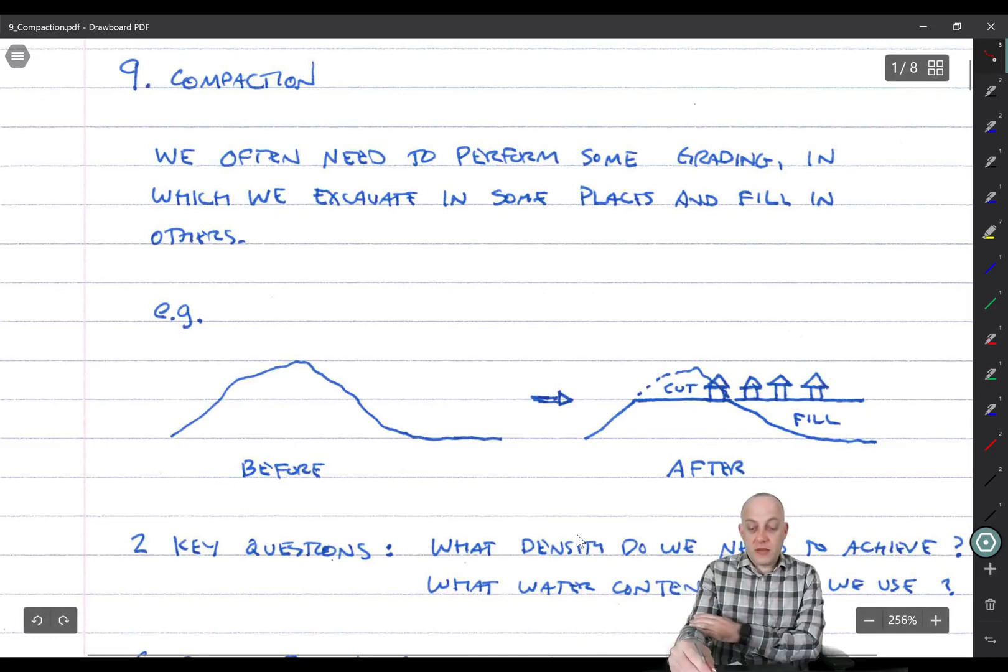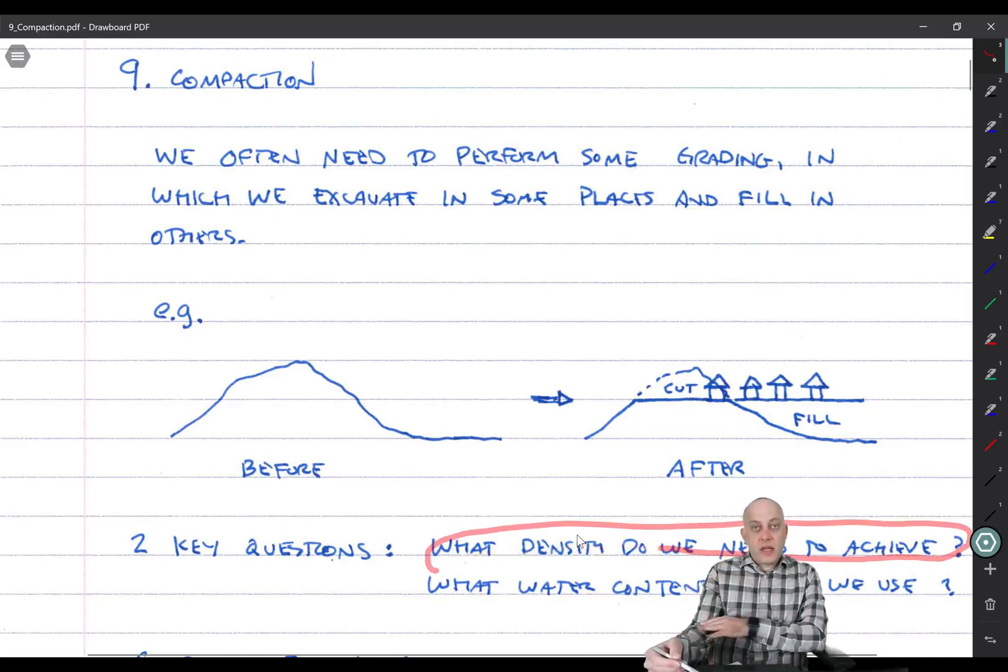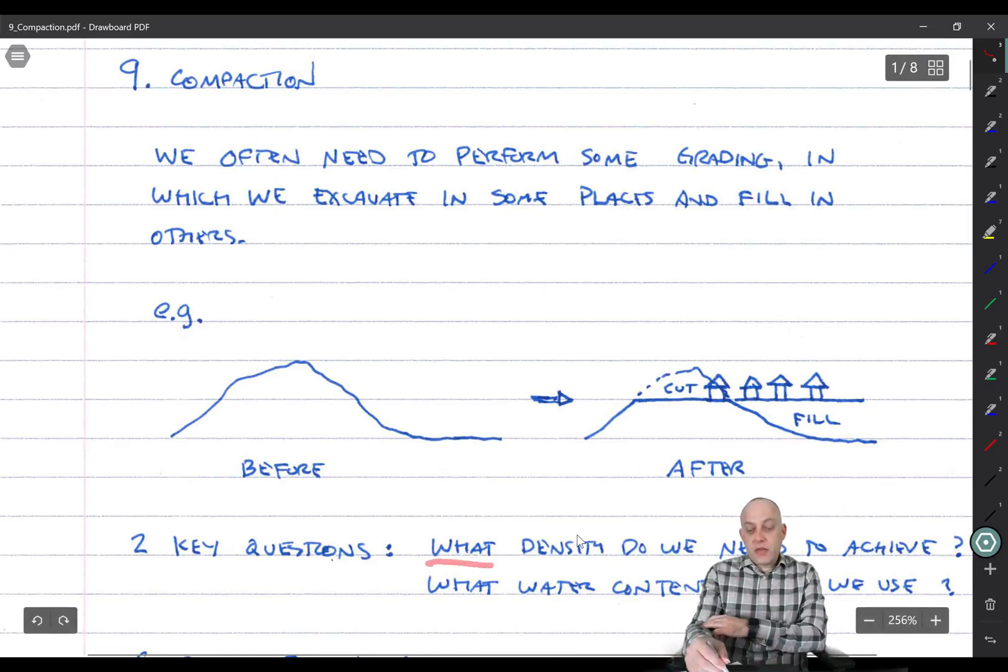So if we're going to do this, if we're going to take cut material and compact it to make a fill, we really have to answer two questions. What density do we need to achieve? In particular, it's not the total density that we're interested in. The easiest way to make soil denser is to just fill up the void space with water. If you increase the total unit weight that way, that doesn't do anything to increase the strength and stiffness of the soil. So what we focus on here is what dry density do we need? How closely packed do the solid particles need to be in order for us to achieve the desired strength and stiffness?